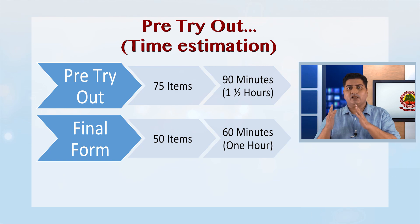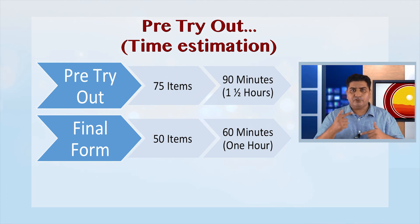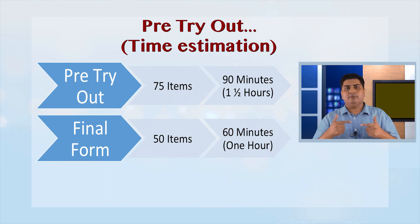In addition to finding defects, the pre-tryout is also used to estimate the time limit. For example, in Case 1, we planned 50 items in the final form but wrote approximately 75 items — so during the pre-tryout, subjects attempt 75 items. If the time taken by most students is about one and a half hours, then for the final form with 50 items, a time limit of one hour will be sufficient. In this way, we proportionately calculate the required time limit for a test.